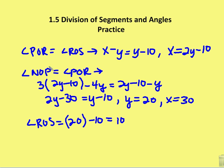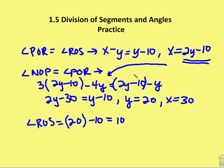Now I set up another two angles: NOP is equal to POR. NOP I have as 2y minus 30, which is equal to y minus 10. NOP is 3x minus 4y, and I've substituted the value I got for x from solving angle POR equals ROS — that value is 2y minus 10. So now I have 3 times (2y minus 10) minus 4y is equal to 2y minus 10 minus y. Simplifying the left-hand side gives 2y minus 30, and the right-hand side gives y minus 10.